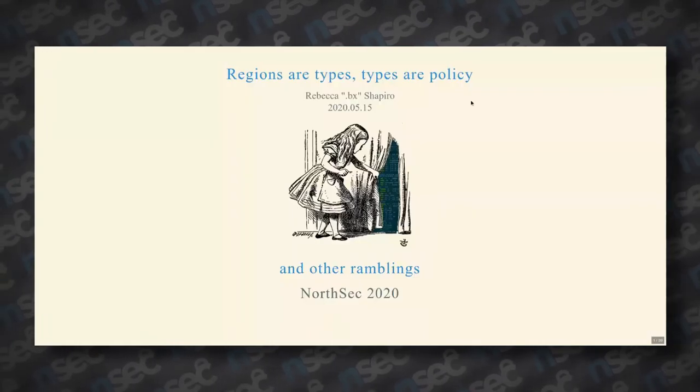She's called Bex. Bex enjoys tinkering with systems in undocumented manners to find hidden sources of computation. She has previously studied the weird machines present in application linkers and loaders, publishing some nifty PoCs along the way, but has since turned her focus toward the kind of loaders that bootstrap systems. Bex is currently a senior security researcher at NARF Industries. The title of her talk is 'Regions are Types, Types are Policy, and Other Ramblings.' Thank you, Bex.